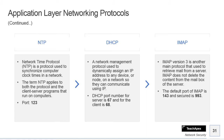The DHCP port number for the server is 67 and for the client is 68. DHCP — Dynamic Host Configuration Protocol — manages the configuration of IP addresses on your network. You don't need to manually assign IP addresses to all network devices; it can assign IP addresses automatically.